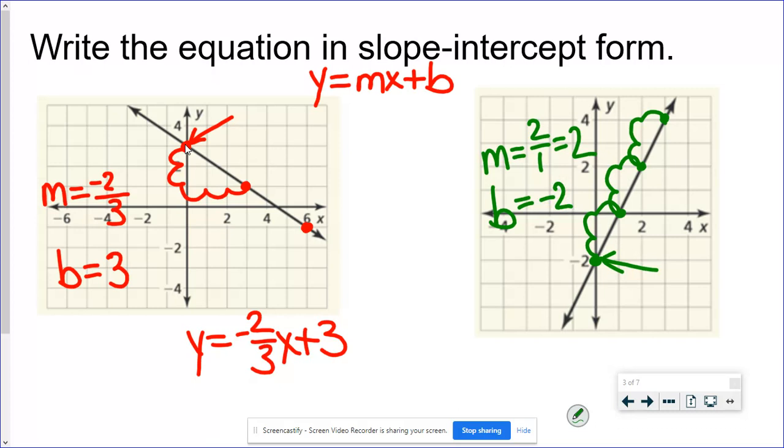So when I write this equation it would be y equals two for the m x and then if we keep it with the plus like we have in the actual equation we'd say plus a negative two. You know that you can clean that up and make it look like that. Those are the same answer.